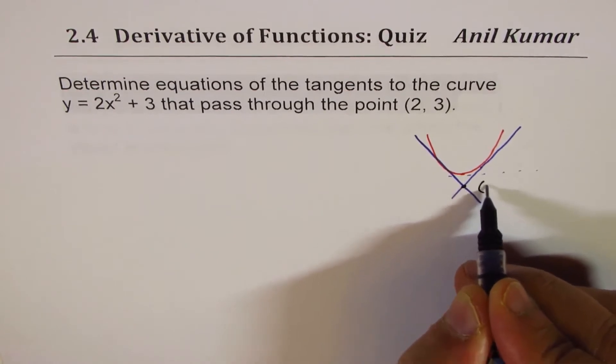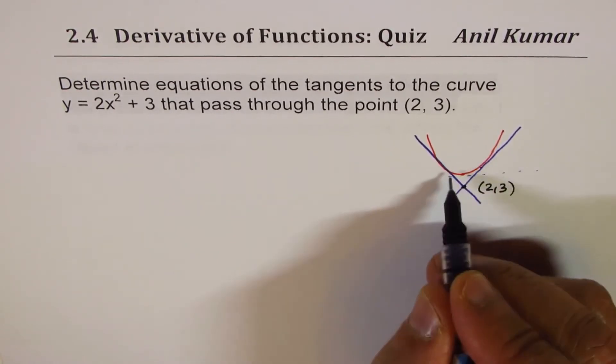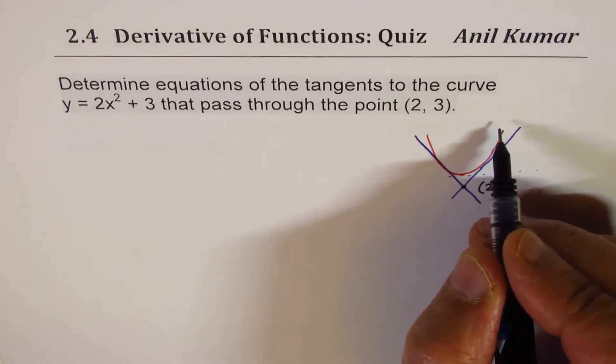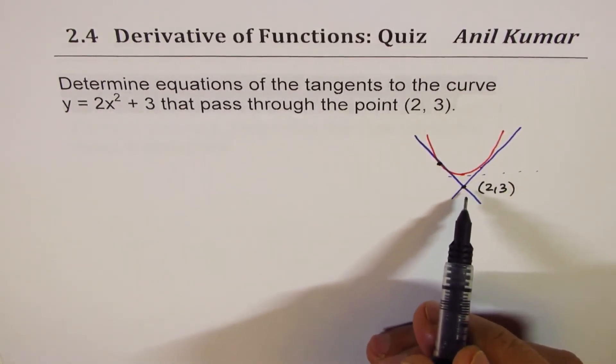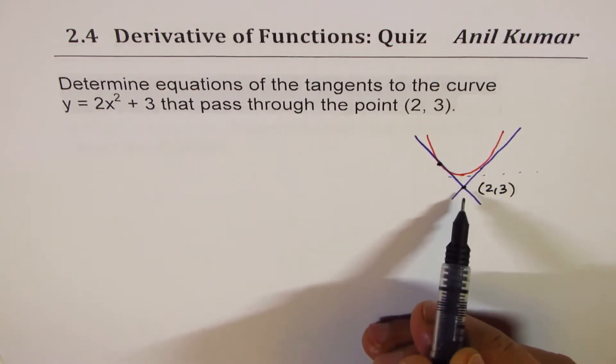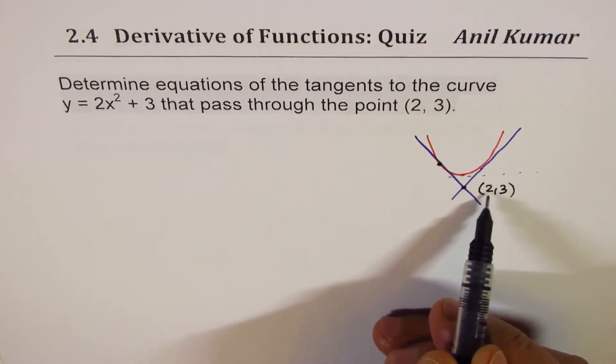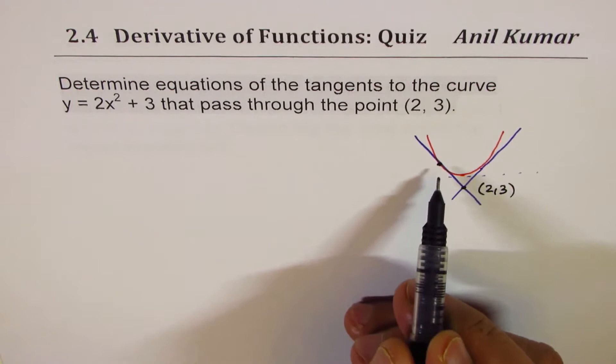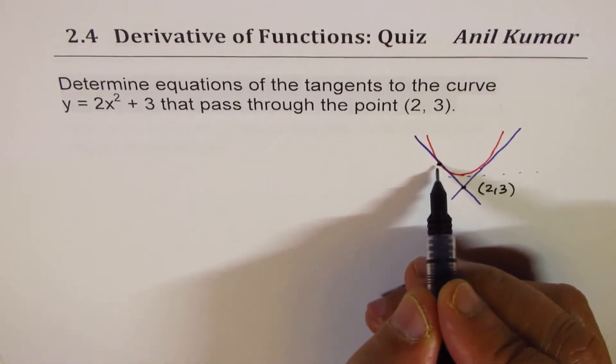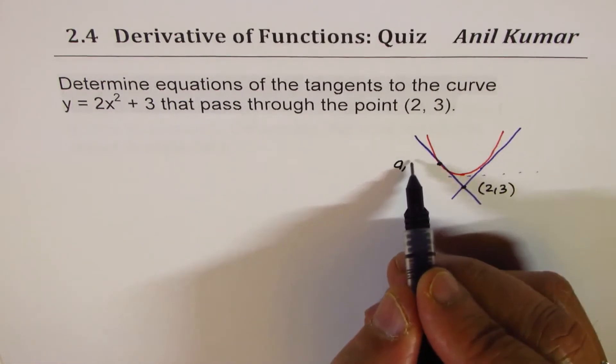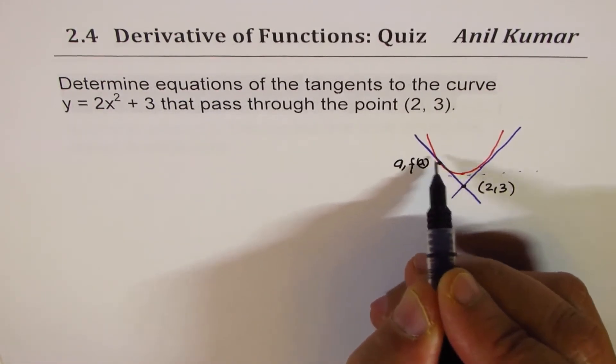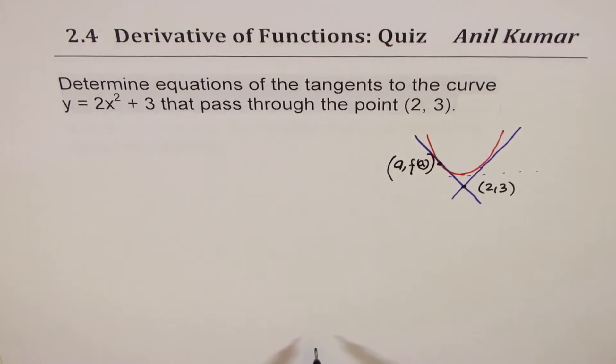We say this is the point (2, 3) for us, external to the curve, and that's the curve. Let us assume that the point on the curve where we have a tangent from external point (2, 3) is at x equals a. So this point will be (a, f(a)).